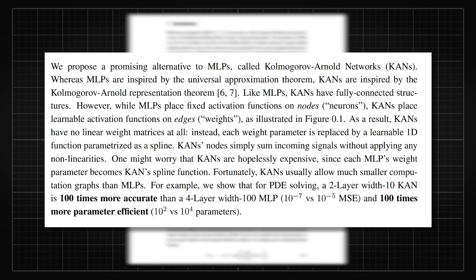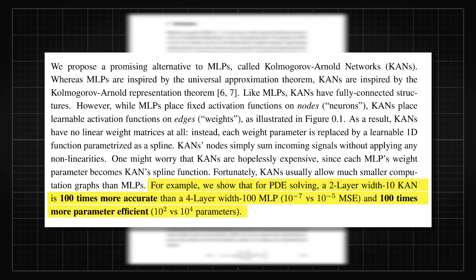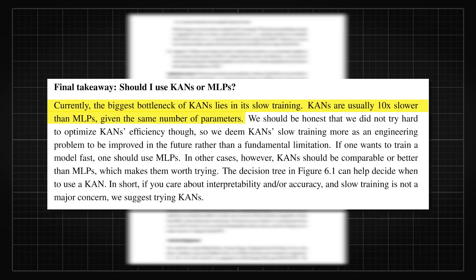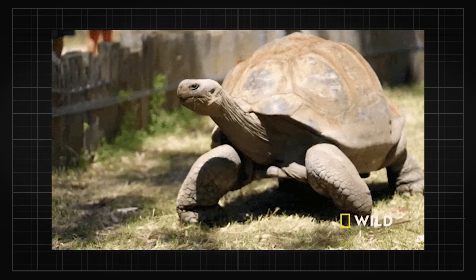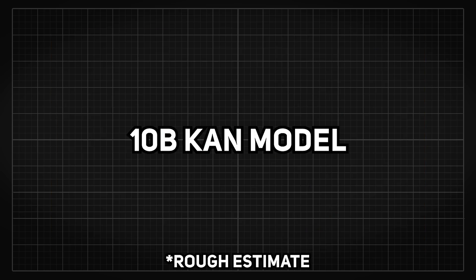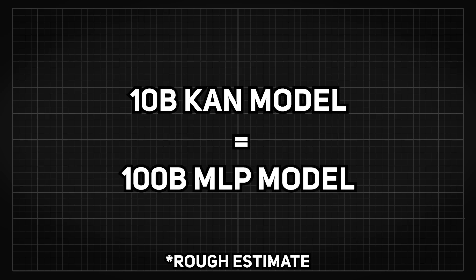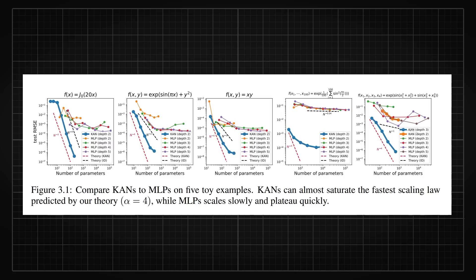If we extrapolate the authors' findings extremely optimistically, KAN is 100x more parameter efficient but still 10x slower to train than MLP. However, even after this 10x slowdown, we are still left with 10x more efficiency. So a 10B KAN model would be equivalent to a 100B MLP model, meaning we would get models that use 10x less VRAM — and we are not even counting the benefits that the scaling law might provide.